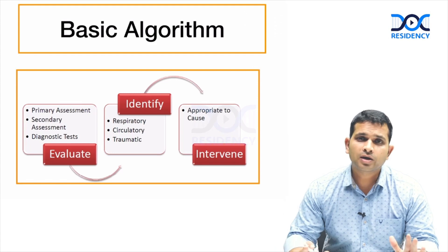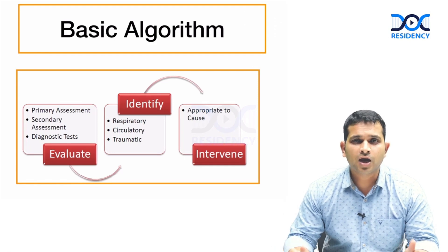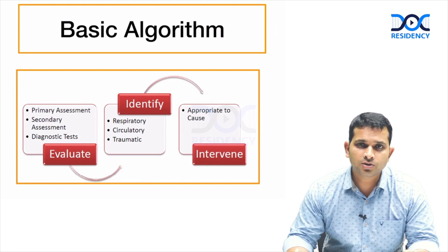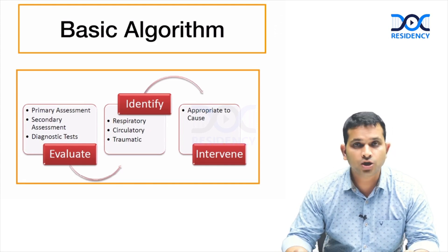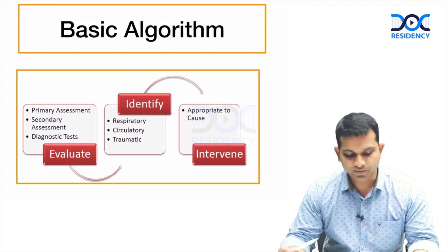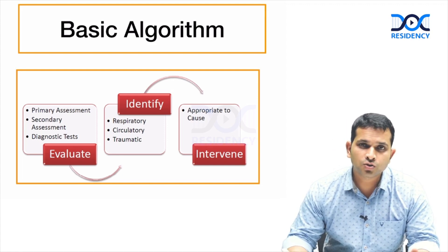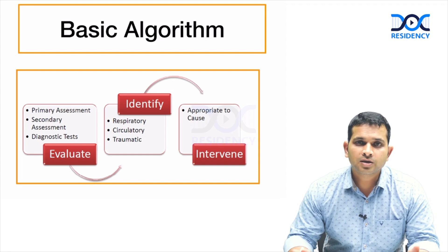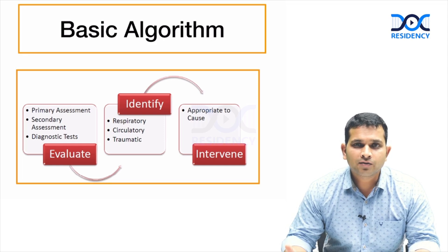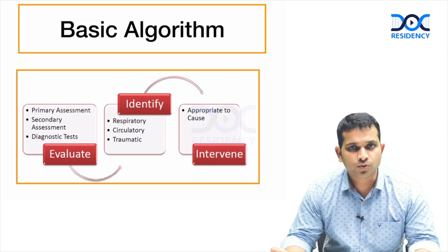When talking about any condition in the emergency, we have to follow a basic algorithmic approach. Whenever a child comes in, we evaluate, identify, and intervene. The basic evaluation is the primary assessment — what is primary assessment? When the child comes to you, you assess airway, breathing, circulation, and disability. We call it the ABCD approach.